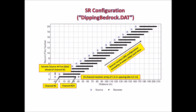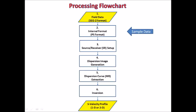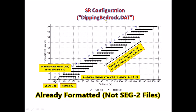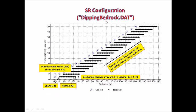This chart shows how the sample dataset called deepingbedrop.dat was generated. There were originally 20 field files or field records generated, but all of them were formatted and combined together to make this one file. So whenever you import this dataset, you have to choose formatted seismic data, not SEG-2 seismic data.